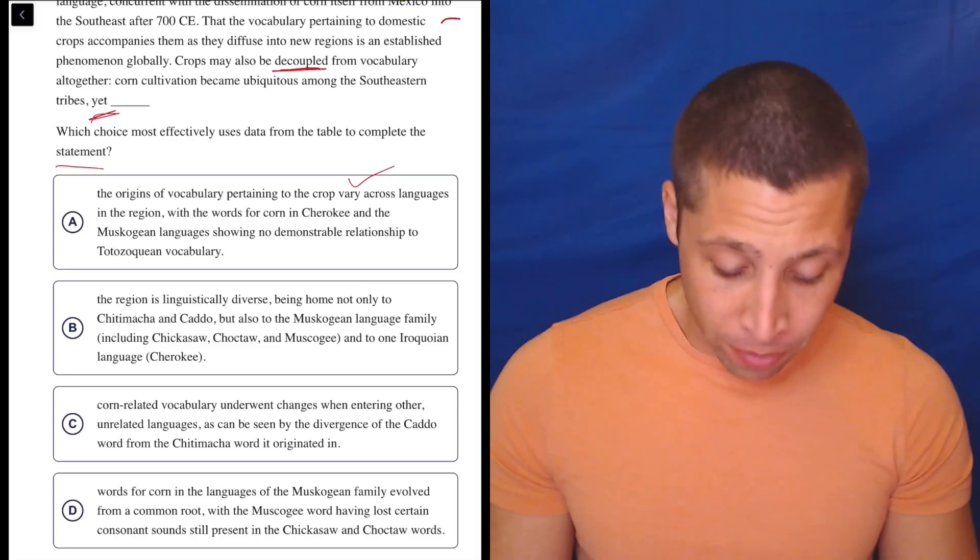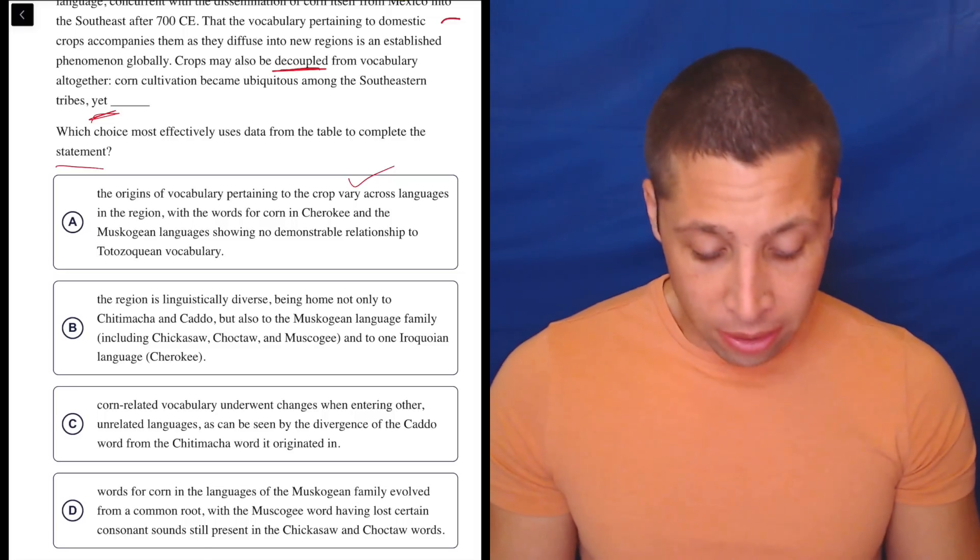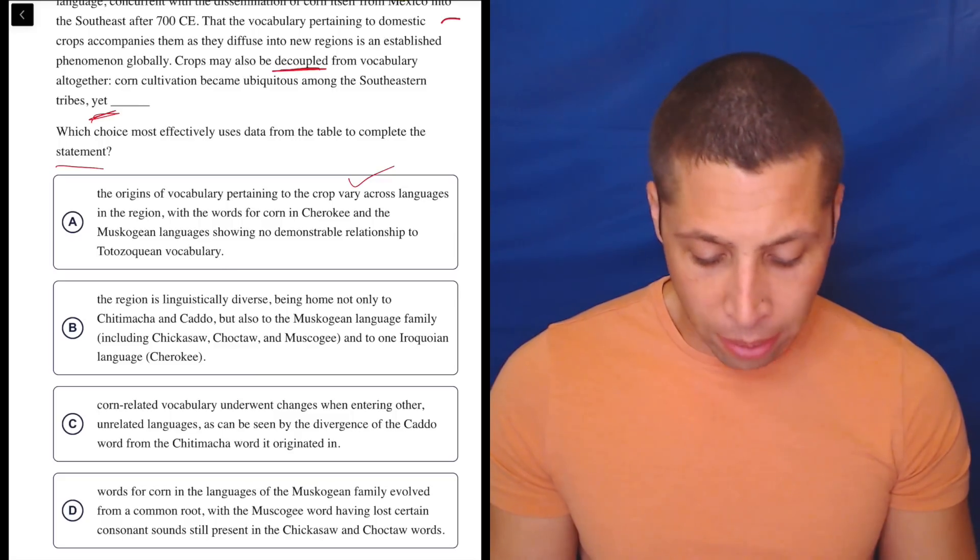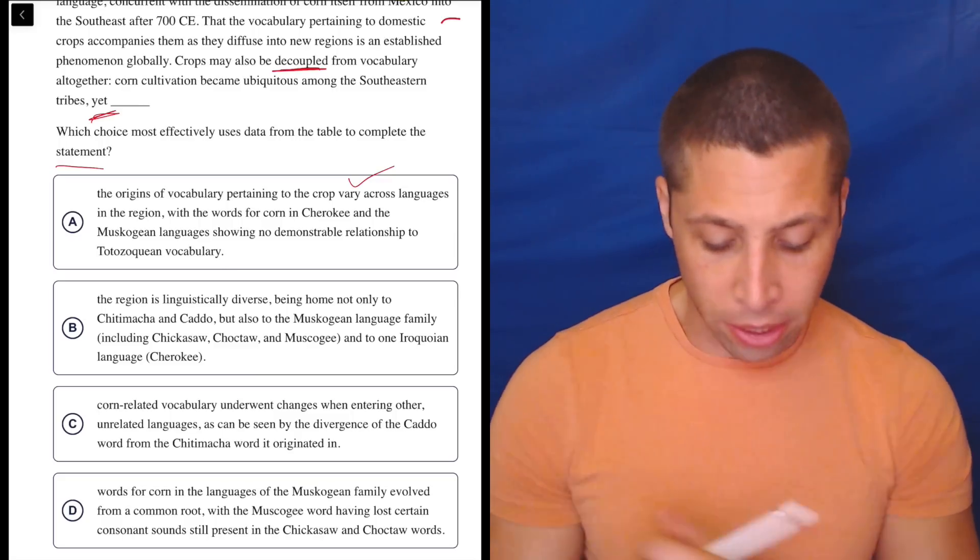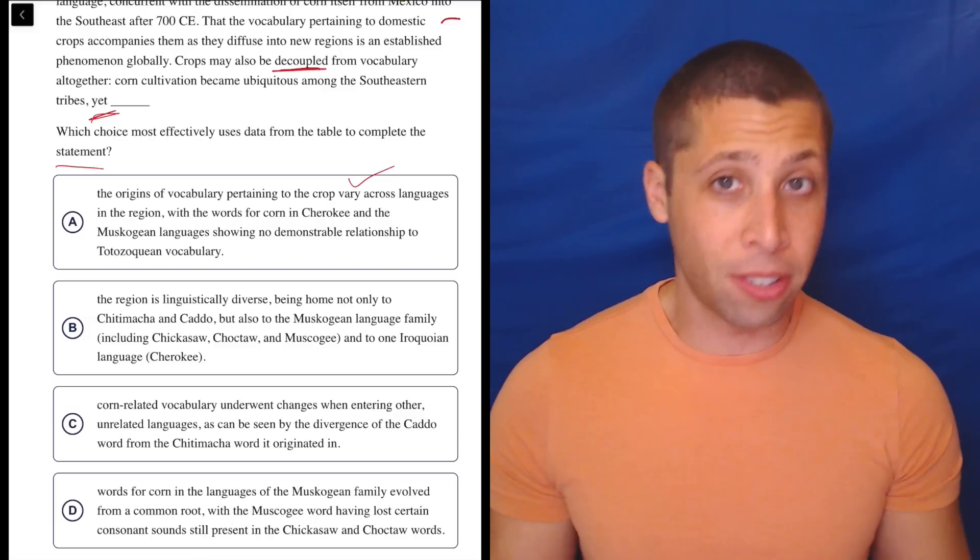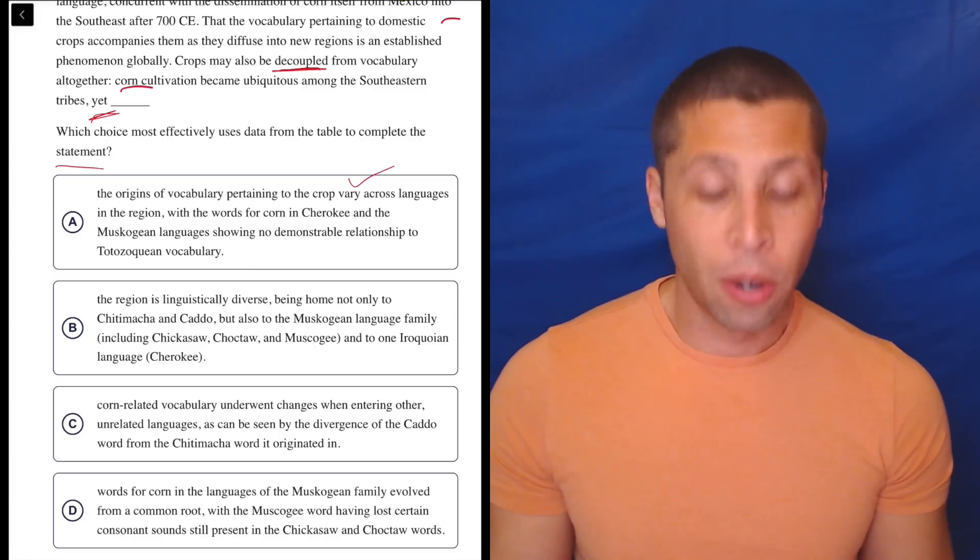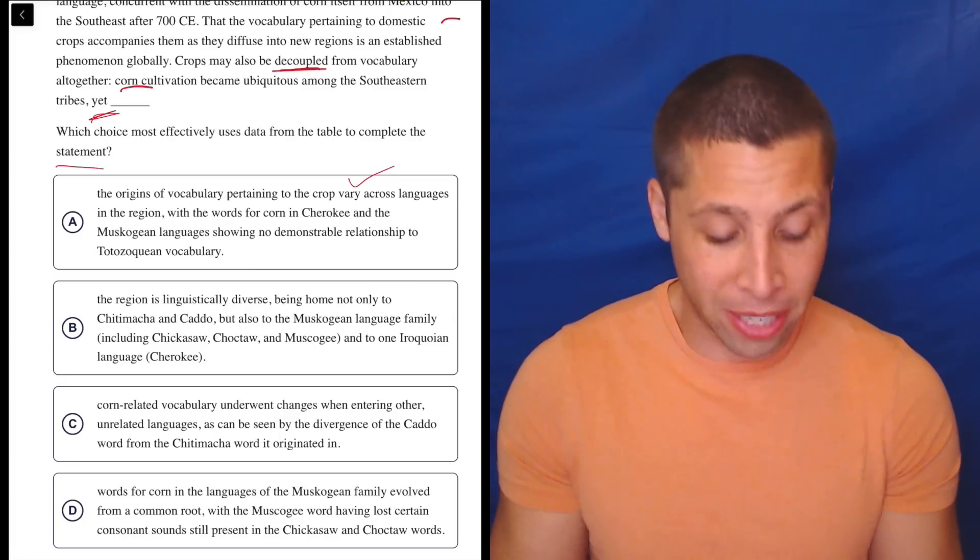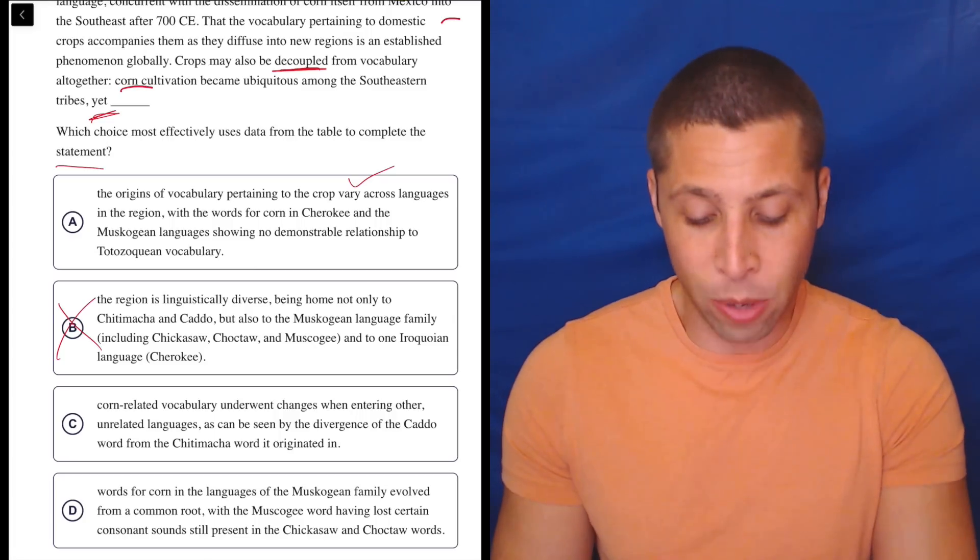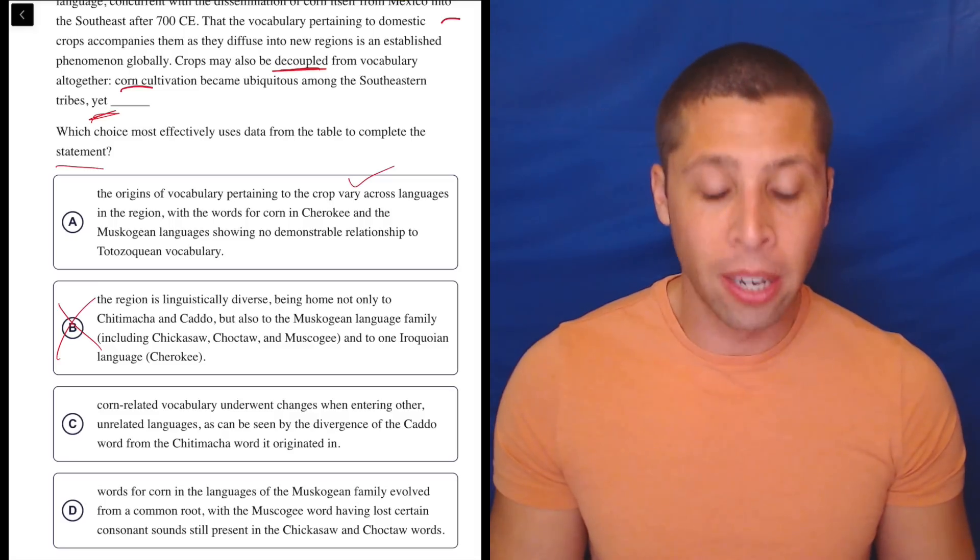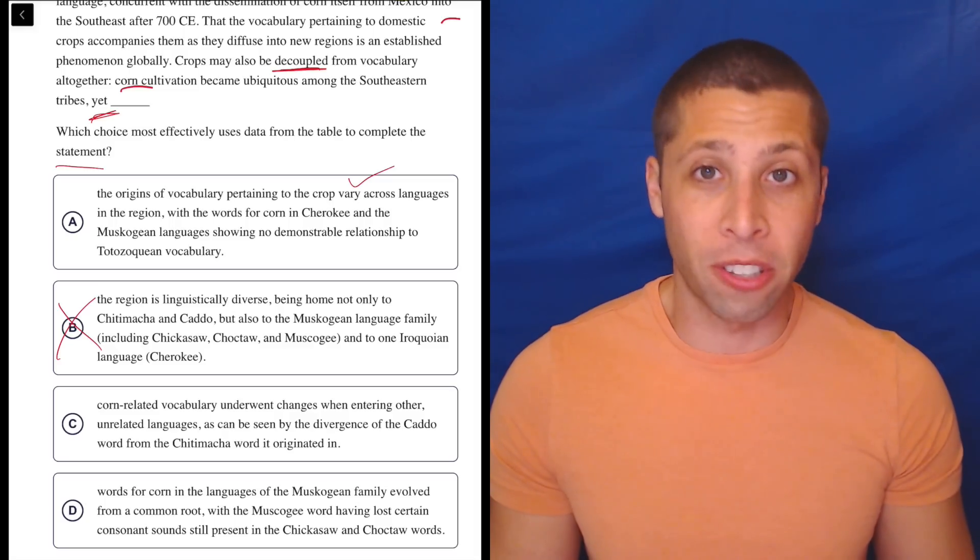So let's look at B. The region is linguistically diverse, being home not only to these two languages, but also to the Muscogean language families and to one Iroquoian language. Well, none of that has to do with the corn thing. The passage is about the corn thing. In fact, the last sentence is about the corn thing. So I don't care that there's multiple languages. I mean, that's true, I guess. But who cares? It has nothing to do with my summary, which is that they're talking about the origins of the word for corn. This doesn't mention that at all.